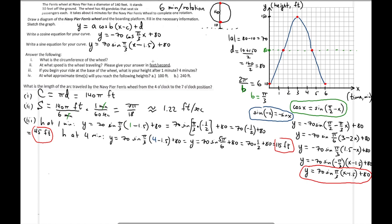So that's the height at 4 minutes — 115 feet. This makes sense because 3 minutes is the maximum at 150 feet, so at 4 minutes we're past the halfway point and the height is decreasing again back toward the minimum. So it's smaller than the maximum height — we're somewhere on the descending part of the curve around 4 minutes.